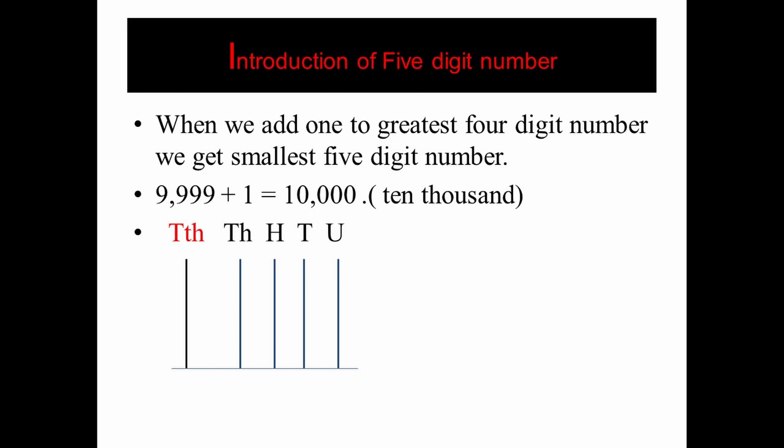How do we get a five digit number? When we add one to the greatest four digit number, we get the smallest five digit number. The greatest four digit number is nine thousand nine hundred and ninety nine (9999). Add one to it and we get ten thousand (10000), which is the smallest five digit number.